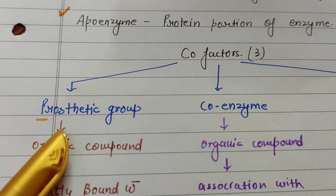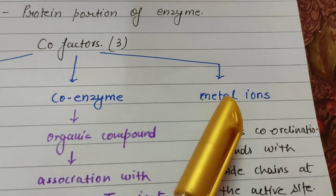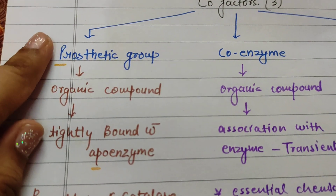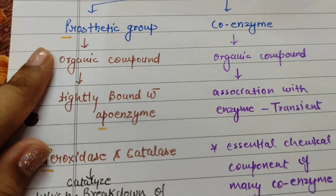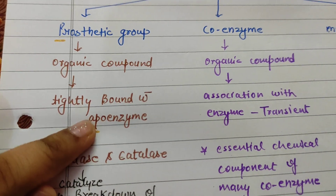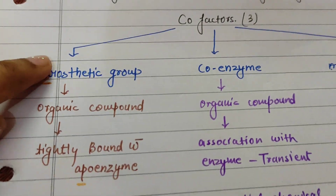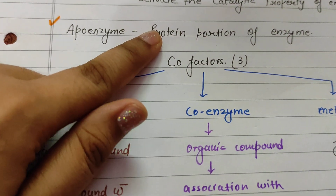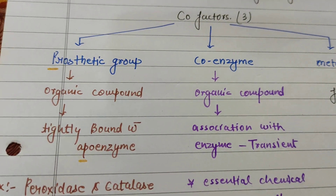The first is Prosthetic group, the second is Coenzyme, and the third is Metal ions. First we will talk about the Prosthetic group. The Prosthetic group is an organic compound that is tightly bound with the Apoenzyme.